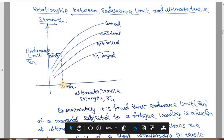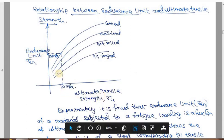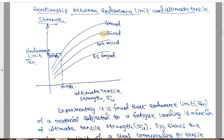For example, taking 70 MPa as the ultimate tensile strength and marking it on the graph for a ground surface, we get about 35 MPa on the y-axis — meaning the endurance limit is 50% of the ultimate tensile strength for a ground surface. For other rougher surfaces, the endurance limit is even less. As surface roughness increases, the endurance limit decreases. A smooth surface gives a better endurance limit.